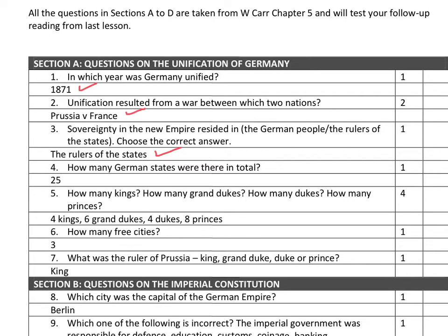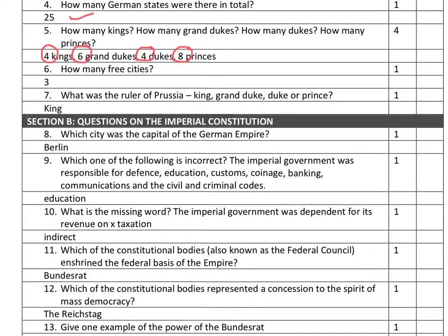I'll add a little bit of information so you get the value from the podcast. Question four: how many German states were there in total? Including Prussia, there were 25 German states. Question five: there were four kings, six grand dukes, four dukes, and eight princes. All of these answers are in the beginning of chapter five from William Carl's book, A History of Germany. And there were three free cities — three of the states were free cities.